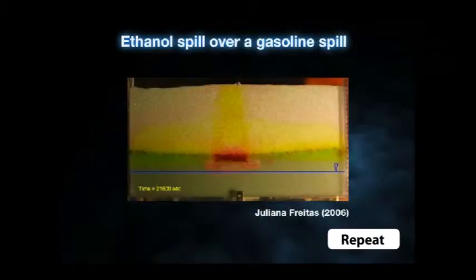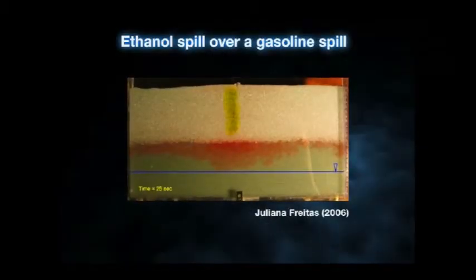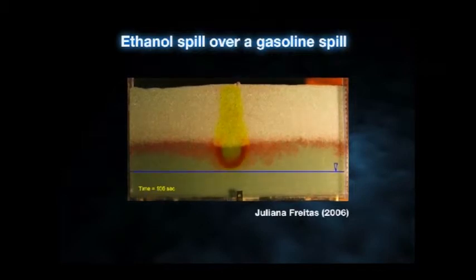The water table is defined as the position where water would be under only atmospheric pressure. If you destroy the capillarity by adding ethanol, which is perfectly miscible, you no longer have capillarity. It will act only under atmospheric pressure and sit on top of the water as it would in a glass. That's why the water table acts as a barrier.